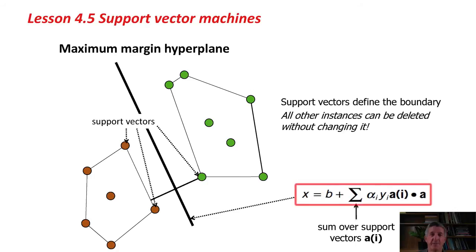There's an equation, a simple equation, and this is the last equation in this course. A simple equation that gives the formula for the maximum margin hyperplane as a sum over the support vectors: x = b + sum over support vectors of alpha_j y_j a(j) dot a. It's pretty simple to calculate this maximum margin hyperplane once you've got the support vectors. It's a very easy sum. Like I say, it only depends on the support vectors. None of the other points play any part in this calculation.